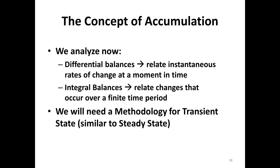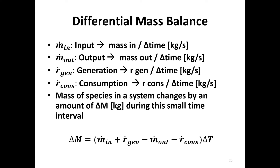We want to analyze the differential balance and the integral balance. A differential balance relates instantaneous rates of change at a moment in time. An integral balance relates changes that occur over a finite time period — for example, from the beginning until the end of the process. For the differential mass balance, the change in mass of species A in a system is: Δm = (mass in) + (rate of generation) − (mass out) − (rate of consumption), multiplied by the time interval Δt.